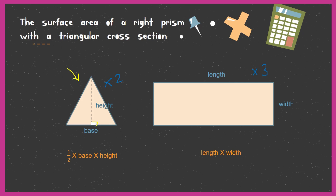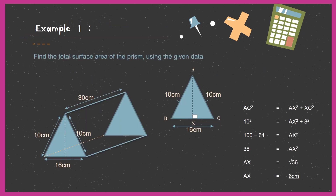Example: Find the total surface area of the prism using the given data. We have an isosceles triangle with two equal sides of 10 cm and a base of 16 cm, and three rectangles of length 30 cm and width 10 cm. We cannot find the area of the triangle yet because we do not know the height. We find the area of a triangle by multiplying half times base times height, so we need to find the height h first.